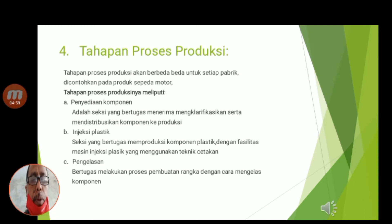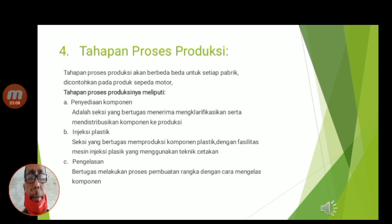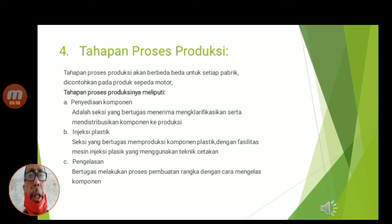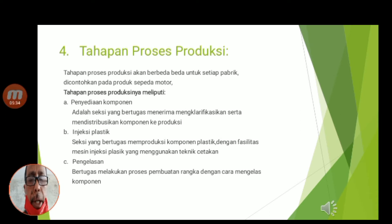Berikutnya, tahapan proses produksi. Tahapan proses produksi ini akan berbeda-beda untuk setiap pabrik. Dicontohkan di sini pada produk sepeda motor. Tahapan proses produksinya meliputi: A, penyediaan komponen. Di sini adalah seksi yang bertugas menerima, mengklarifikasikan, serta mendistribusikan komponen ke produksi.